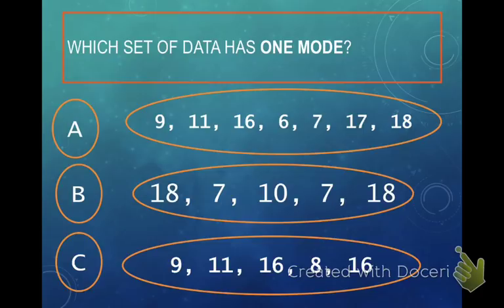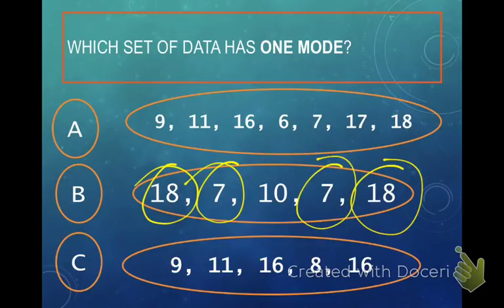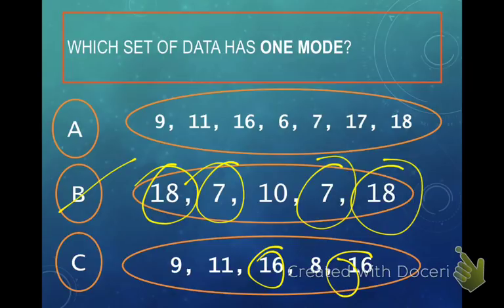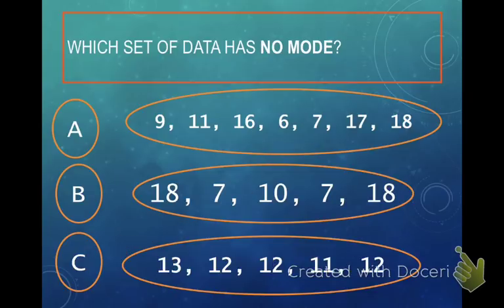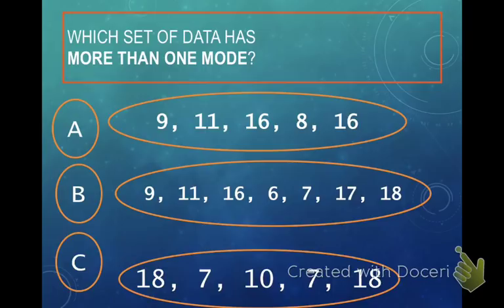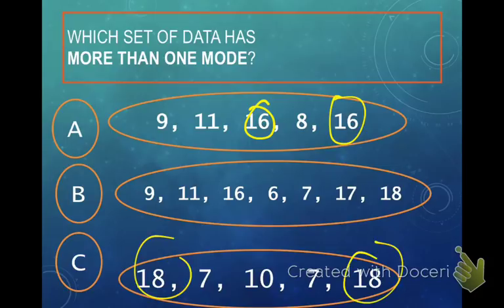Which set of data has only one mode? You should order them from least to greatest first. One set has an 18 and an 18, and a 7 and a 7 — that means there are two modes, so it's not that one. Another set has a 16 and a 16. And one set has no numbers that are the same, so that one has no mode. The answer for only one mode is C. Which data has no mode? That was A — it had no mode. Which one has more than one mode? Looking again: there's a 16 and a 16 in that set, so it's C.